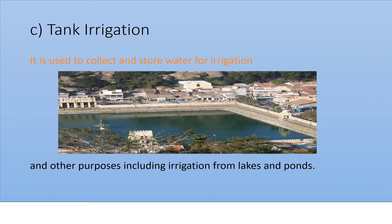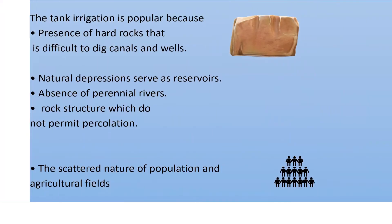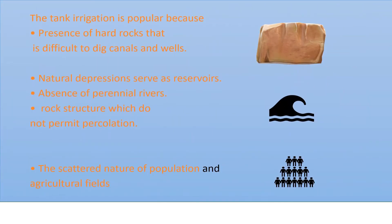The next type is tank irrigation. In tank irrigation, we collect and store water in a lake or pond for irrigation purposes. This is called tank irrigation. Tank irrigation is very popular because, firstly, there is the presence of hard rocks, which makes it difficult to dig canals and wells. Natural depressions serve as reservoirs where we store water.